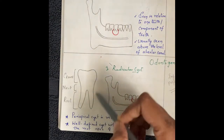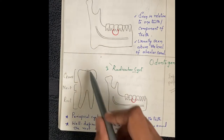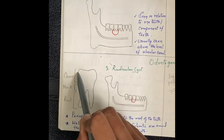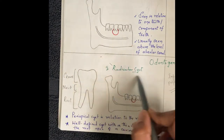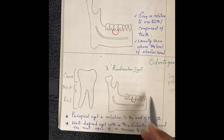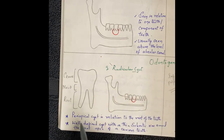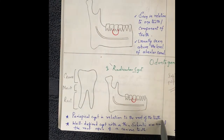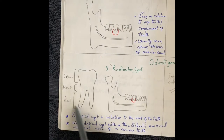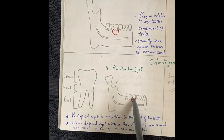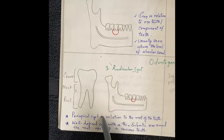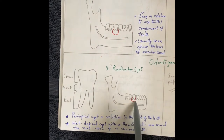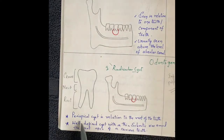Before going into the cysts, we should know the components of a tooth. We have a root, a neck, and a crown. The radicular cyst is a periapical cyst located in relation to the root of the tooth. The cyst which is located in relation to the root is called the radicular cyst.